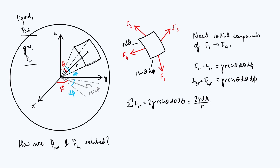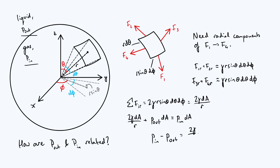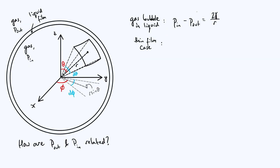Now we consider the balance of forces in the radial direction. There's an inwards radial force from surface tension of 2·gamma·dA/r, and an inwards force from the external pressure P_out trying to collapse the bubble, equal to P_out·dA. These must balance the outwards force from the internal pressure P_in·dA. The dA cancels, and we arrive at the result: P_in − P_out = 2·gamma/r. So for a bubble of gas inside a liquid, the excess pressure inside is 2·gamma/r, where gamma is the surface tension.